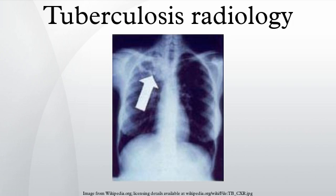Pleural effusion: presence of a significant amount of fluid within the pleural space. This finding must be distinguished from blunting of the costophrenic angle, which may or may not represent a small amount of fluid. Hilar or mediastinal lymphadenopathy: enlargement of lymph nodes in one or both hila or within the mediastinum, with or without associated atelectasis or consolidation. Linear interstitial disease: prominence of linear interstitial markings. Other: any other findings suggestive of active TB, such as miliary TB.